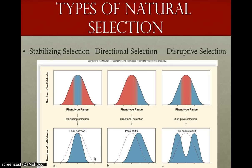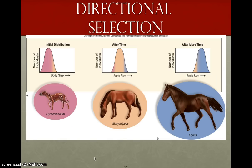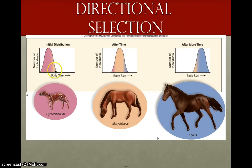The next type is directional selection. In this case, an extreme phenotype is favored, and the curve moves in one direction — either right or left — as the population adapts to a changing environment. Horses are a great example. The ancestors of horses, like the Hyracotherium, were much smaller because they lived in forests. But as the habitat changed to open grasslands over time, it became more advantageous to be larger and able to run more. Smaller body types were favored in forests, but as the environment changed, larger individuals became more advantageous, and that's how we got the common horse today.